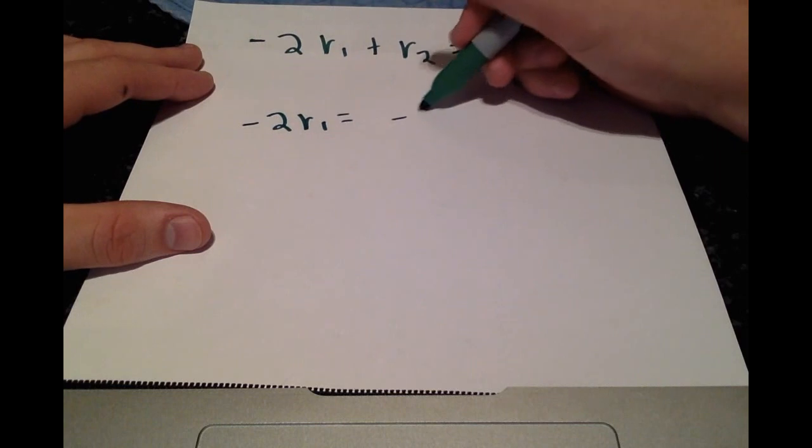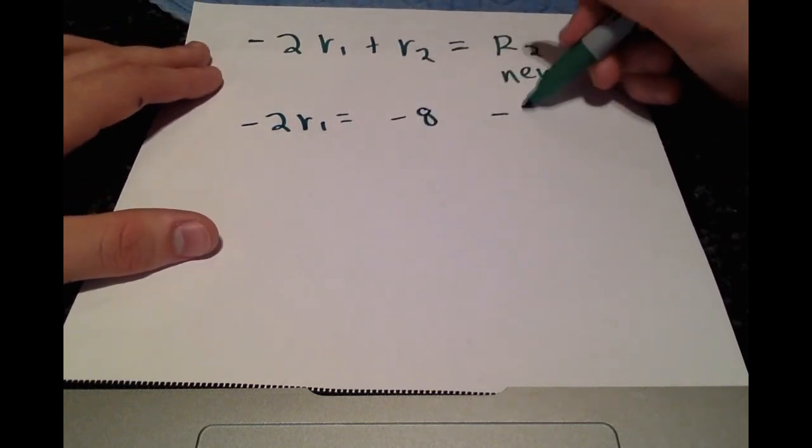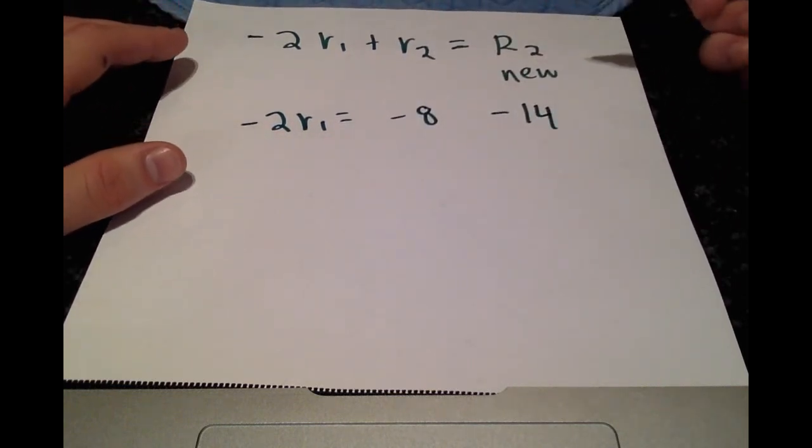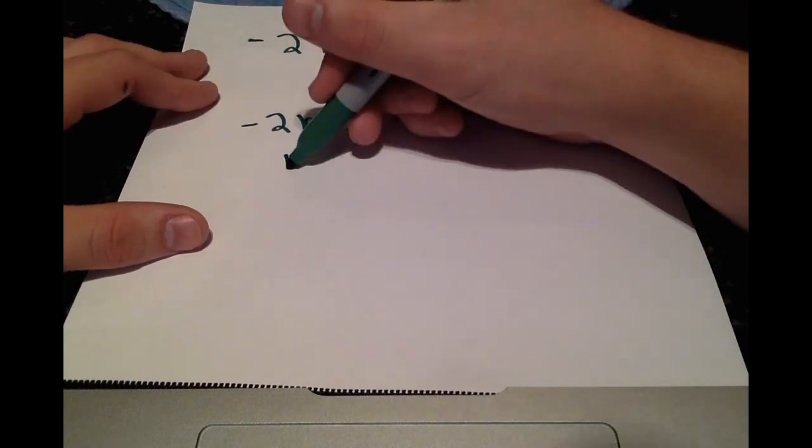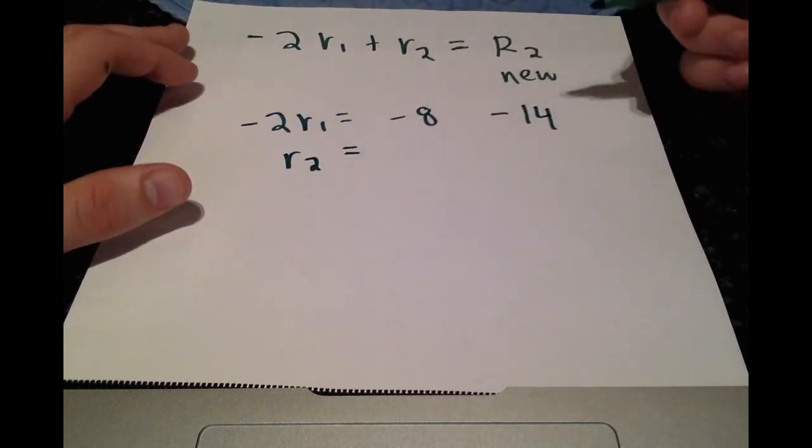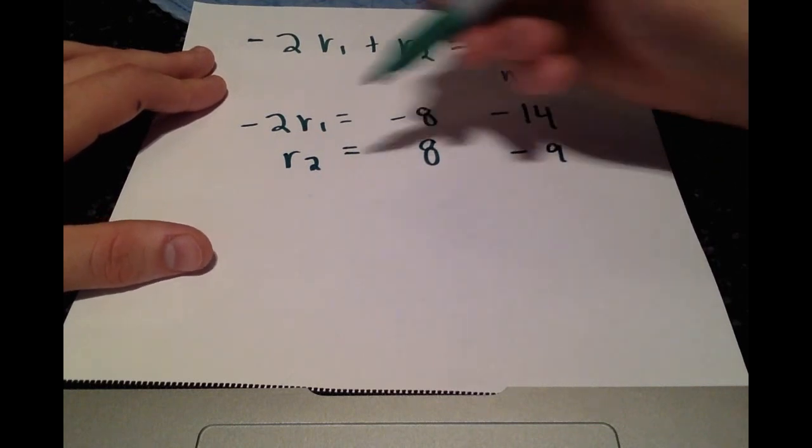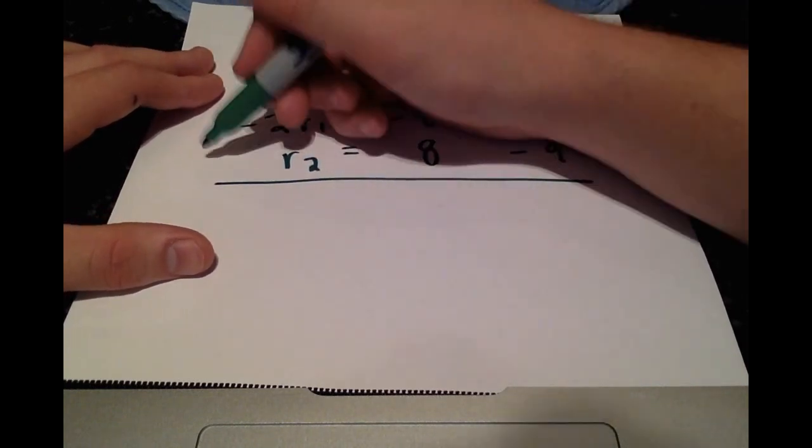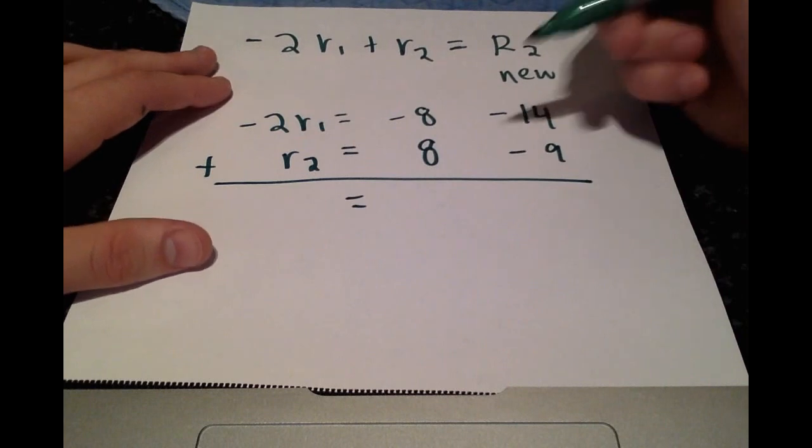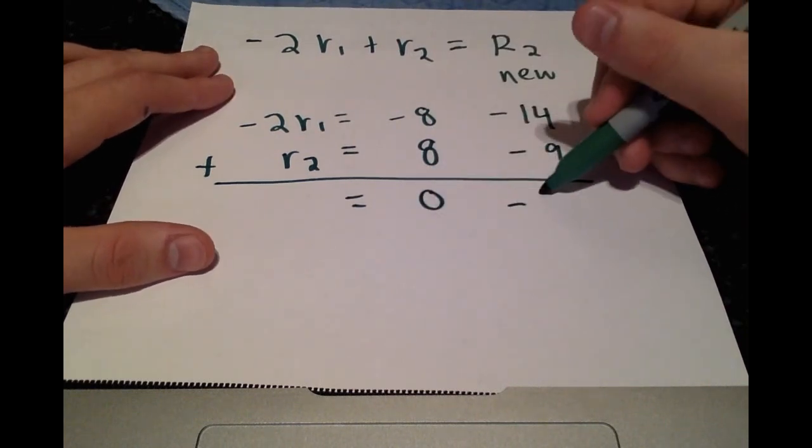So just on the side of your work, I'd recommend writing out each multiplication step on its own. So negative 2 times row 1 is just going to be negative 8 and negative 14. And then row 2 is just going to be 8 and negative 9. Adding these, we get 0 and negative 23.